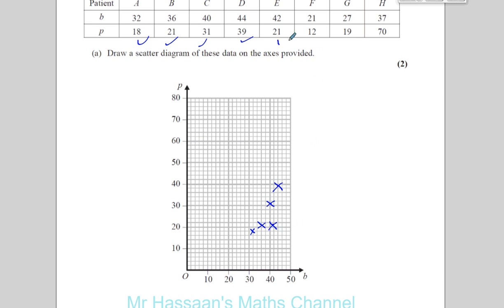It's going to be about here. Okay, 21 and 12. 21 and 12, about there. Then you got 27 and 19. 27, that's 22, 24, 26, 27 and 19. That's about here.